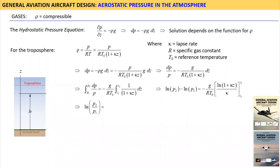Considering the left side again, it can be simplified using a logarithmic identity. Substituting the limits on the right-hand side leads to this expression. Now we only need to substitute proper variables.